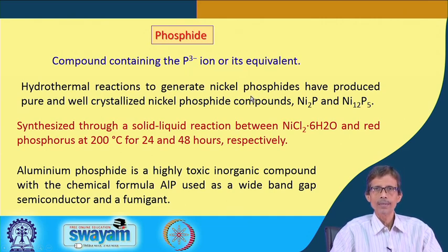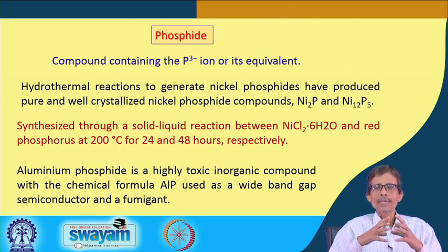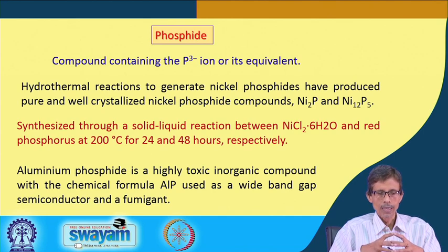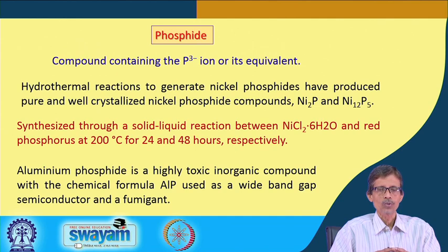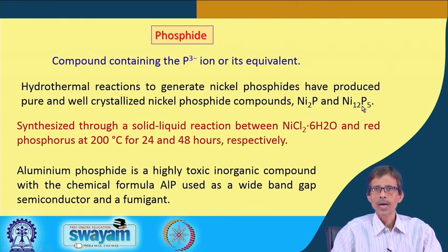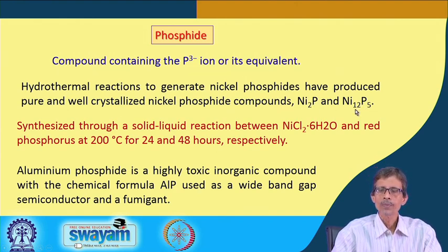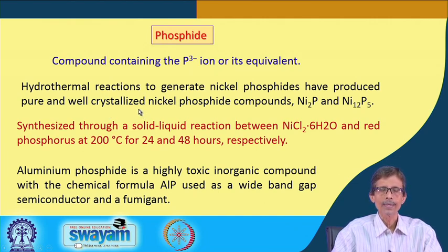The reaction vessel is different here — it is an autoclave type. In the autoclave reaction chamber, you have the corresponding acid medium if required, along with the metal ion salt and the phosphorous source, giving you a pure, well-crystallized nickel phosphide compound. Two examples are Ni₂P and Ni₁₂P₅, which can be formed depending on reaction conditions and how slowly you cool the reaction vessel.